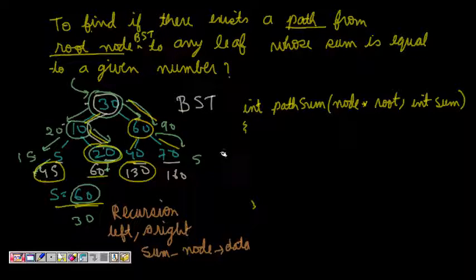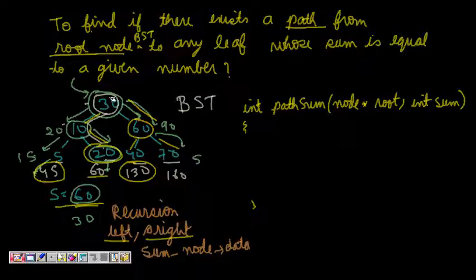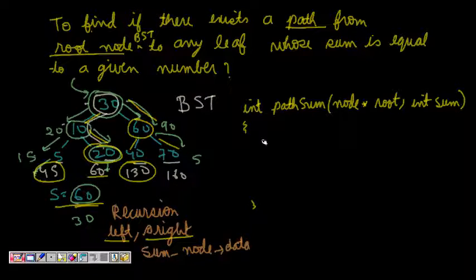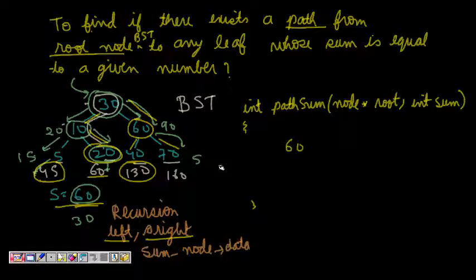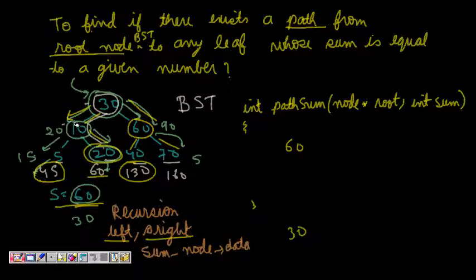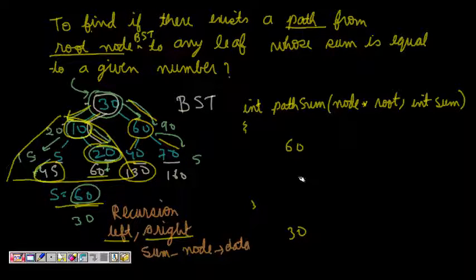We are searching all paths — first left, then right. At each level, the problem becomes smaller: we subtract the node data from the sum and now have to find the reduced sum. For example, at the root node wanting to find sum 60, after visiting root (data=30), the remaining sum to find is just 30.